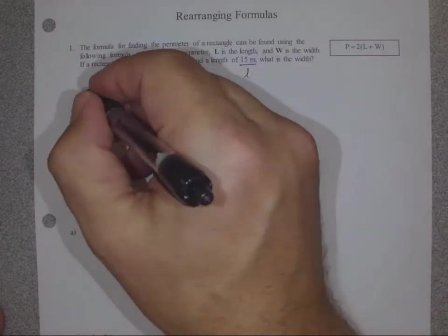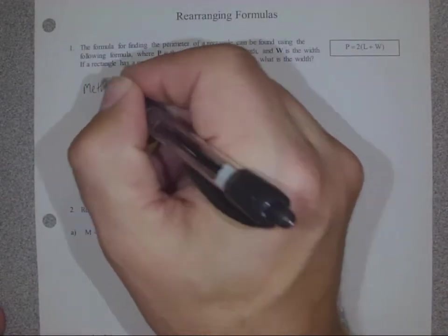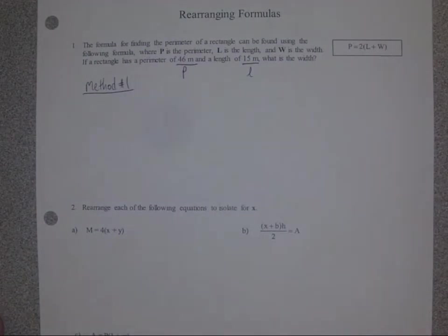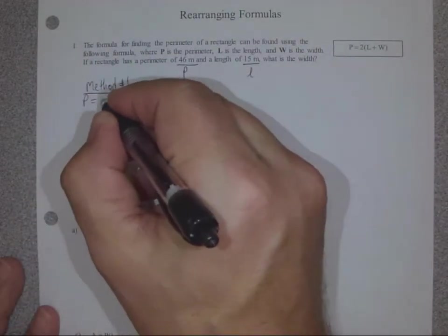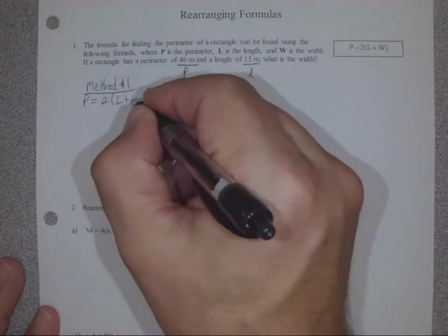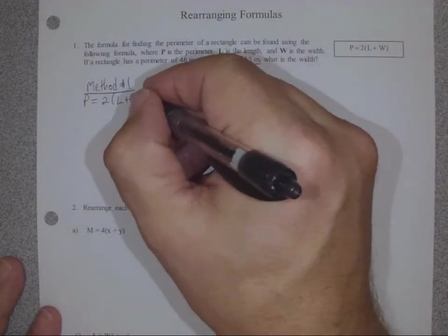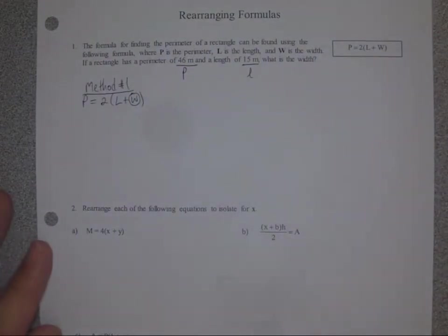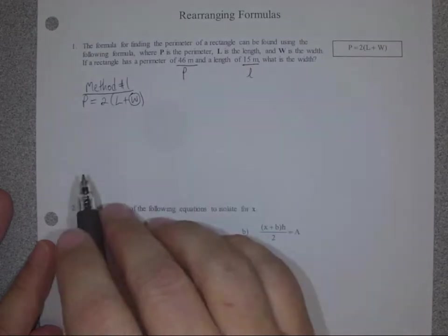Well, according to our method one that we've seen before, we substitute and rearrange. So we're going to write the formula P equals 2 bracket L plus W, circle the variable we're trying to solve for right away, and substitute in the other two variables that were given in the question.